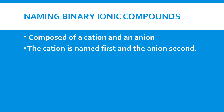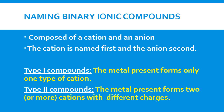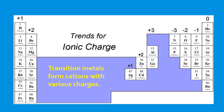Let's look at naming binary ionic compounds. Binary ionic compounds are composed of a cation and an anion. The cation is named first and the anion is named second. In Type 1 compounds, the metal forms only one type of cation. In Type 2 compounds, the metal forms two or more cations with different charges. The metals that form Type 2 ions are our transition metals, because they can form ions with multiple charges.